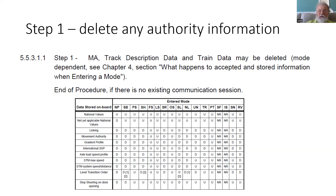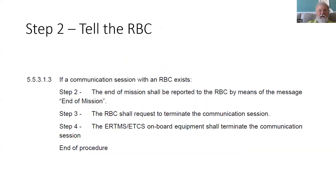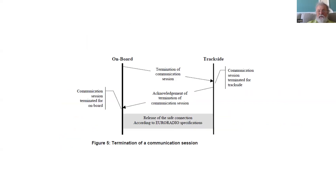If there is no communication session in place, then that is the end of the procedure — no more takes place and the train is now in SB or SH as appropriate. However, if a communication session exists, the RBC needs to be notified and the session needs to be terminated. The onboard will report end of mission using the end of mission message, which includes a position report so the RBC can keep track of where trains were when they reported end of mission. The RBC then requests termination of the session and the onboard terminates it — a simple process described in chapter 3.